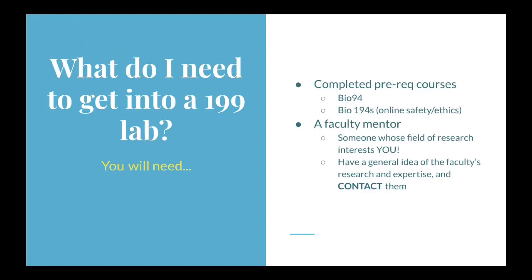So what do you need to get into a Bio 199 lab? First, you must complete the prerequisites: Bio 94 and Bio 194S, the online safety and ethics course. These must be completed before you can be cleared to take Bio 199. You also need a faculty member whose field of research interests you. You should have a general idea of their research and expertise, and you will have to directly contact them to see if there is an opening in their lab.